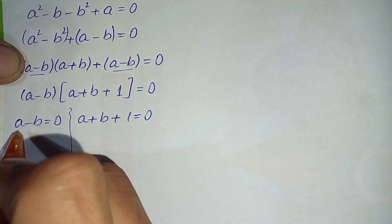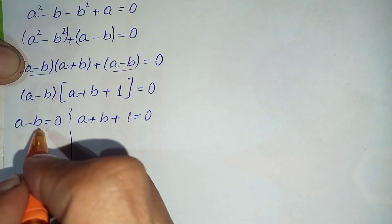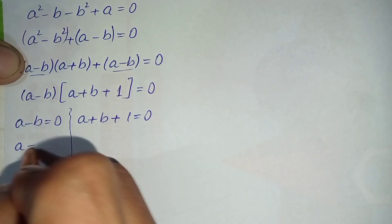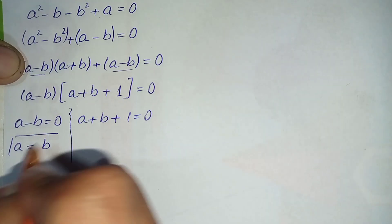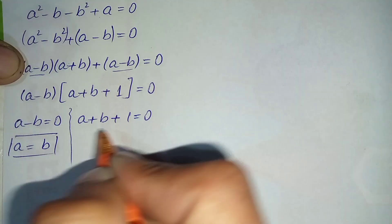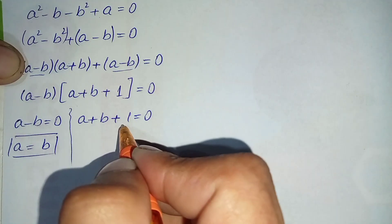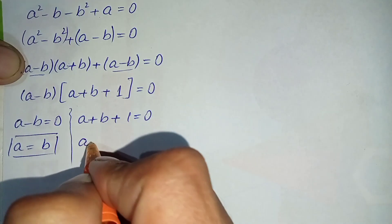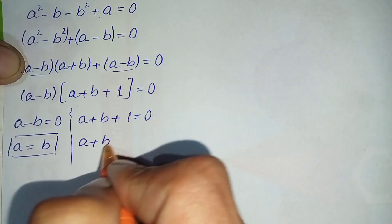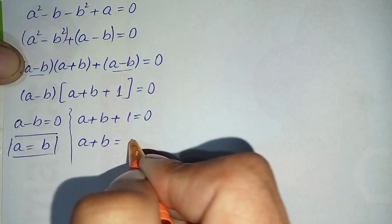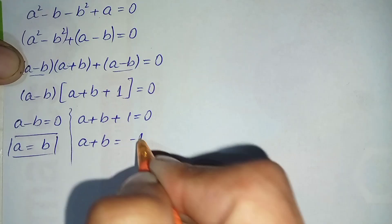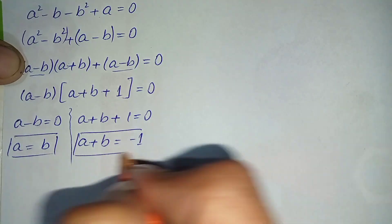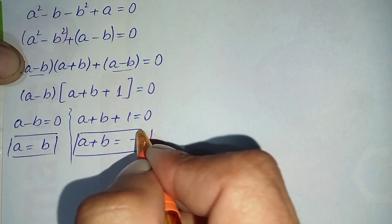From the first case, a equals b. From the second case, shifting plus one to the right-hand side gives a plus b equals minus 1. We call this equation number three.